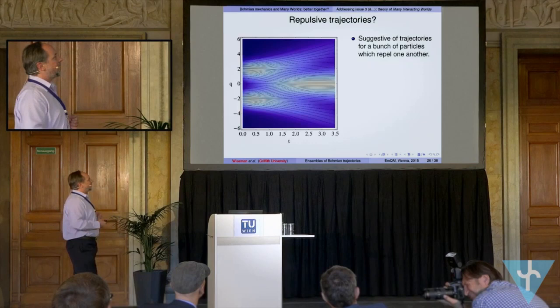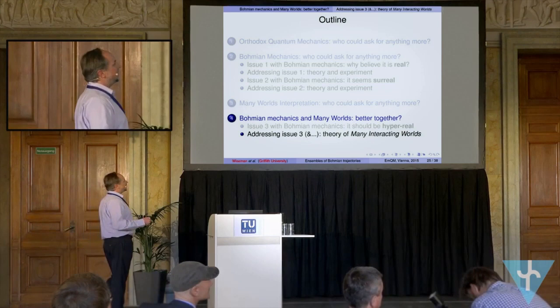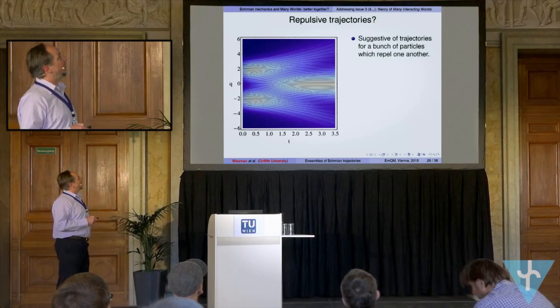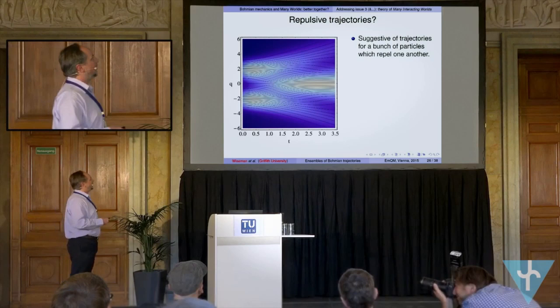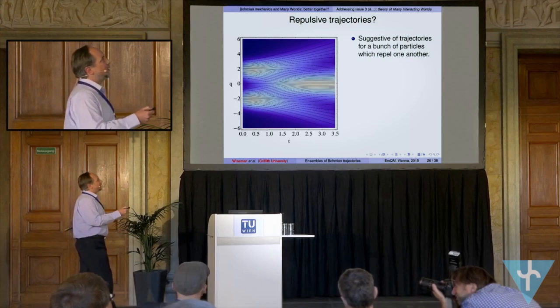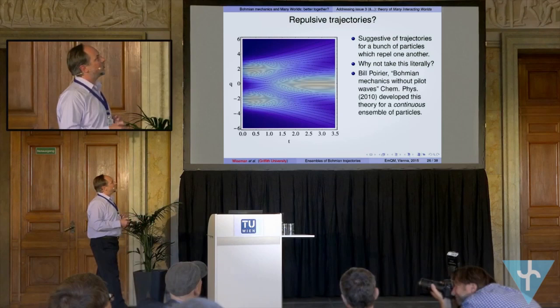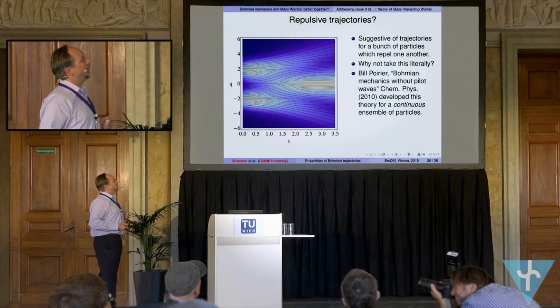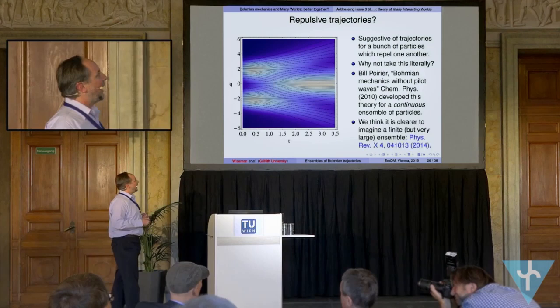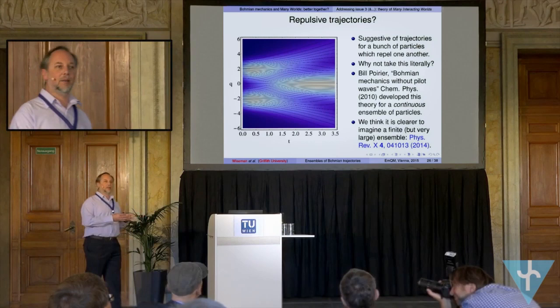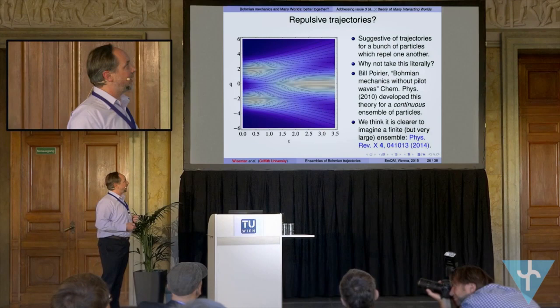We can actually solve these problems — if you believe that they are problems — with this new approach called many interacting worlds. A way to motivate that is just to look at this picture of the Bohmian trajectories for a two-slit experiment. And if you look at it, you just say it looks like a bunch of particles which are repelling each other. So the question is: why not take that literally? The first person to talk about this in detail was Bill Poirier in 2010, though we didn't know about that when we started working on it. There's a slight difference in our approach in that we actually imagine a finite but extremely large ensemble of worlds rather than a continuum, but apart from that the idea is very similar.